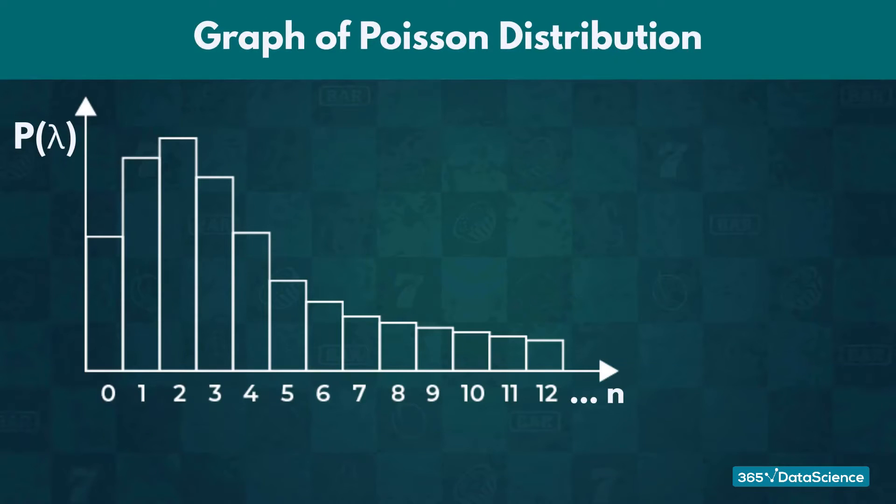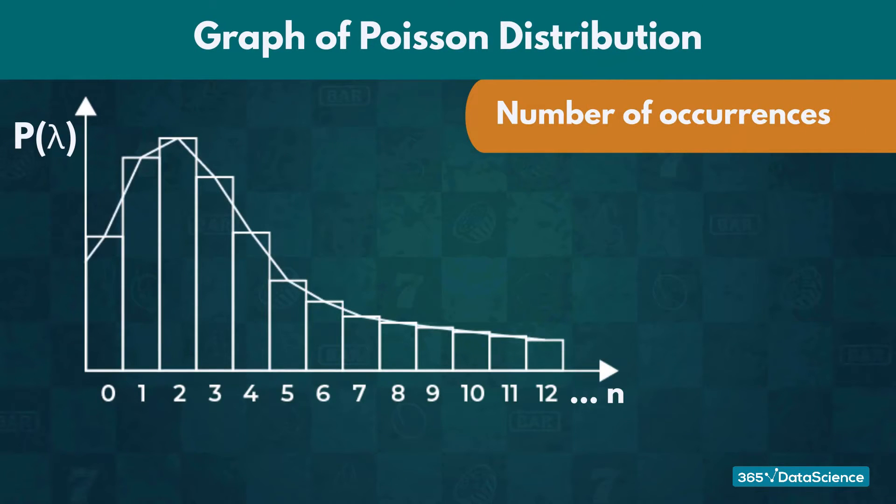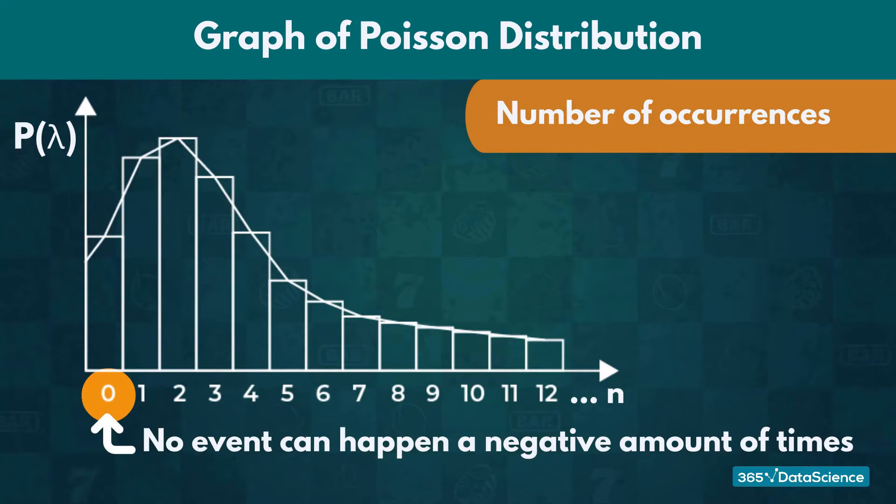The graph of the Poisson distribution plots the number of instances the event occurs in a standard interval of time and the probability for each one. Thus, our graph would always start from zero, since no event can happen a negative amount of times.